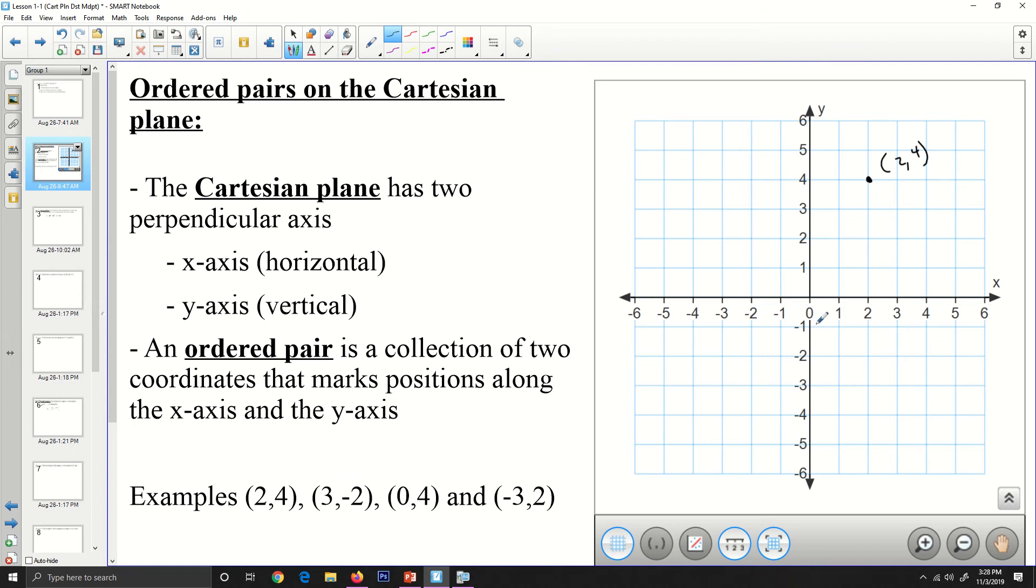The next one is 3, negative 2. So we come over here to 3 along the x-axis, we come down here on negative 2 along the y-axis, and we label it 3, negative 2. And then 0, 4. 0, 4 is a special point because it lies on the y-axis. We stay at 0, but we come up to 4 here. Since it is on the y-axis, we need not label that. And then negative 3, negative 2. We come back negative 1, 2, 3, and we go down to negative 2. So right here is negative 3, negative 2.